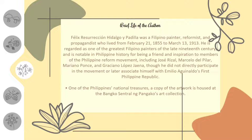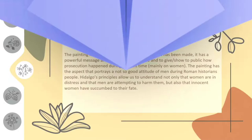Felix Resurreccion Hidalgo Ipadilla was a Filipino painter, reformist, and propagandist who lived from February 21, 1855 to March 13, 1913. He is regarded as one of the greatest Filipino painters of the late 19th century and is notable in Philippine history for being a friend and inspiration to members of the Philippine reform movement, including Jose Rizal, Marcelo del Pilar, Mariano Ponce, and Graciano Lopez Jaena, though he did not directly participate in the movement or associate himself with Emilio Aguinaldo's First Philippine Republic.